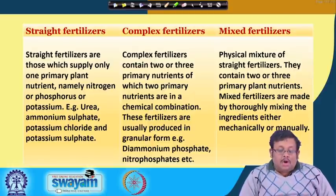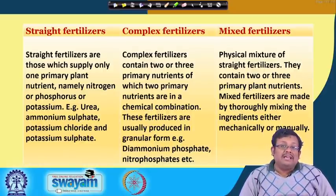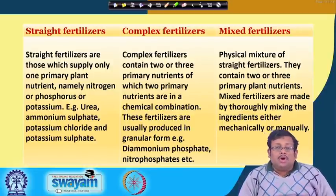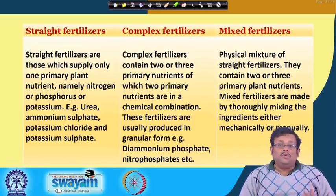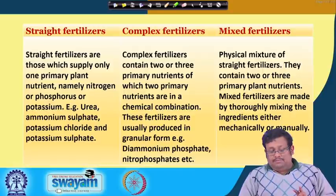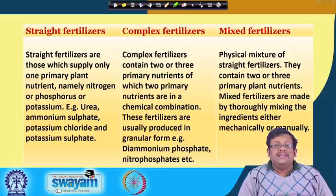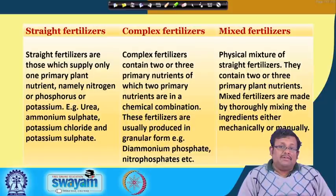Complex fertilizers contain two or three primary nutrients of which at least two primary nutrients are in chemical combination. These fertilizers are usually produced in granular form. Examples include diammonium phosphate and nitrophosphate. The complex fertilizer may contain nitrogen and phosphate, phosphate and potassium, or nitrogen, phosphate, and potassium — a minimum of two macronutrients combined chemically. DAP or diammonium phosphate is an example where nitrogen and phosphate are chemically combined.